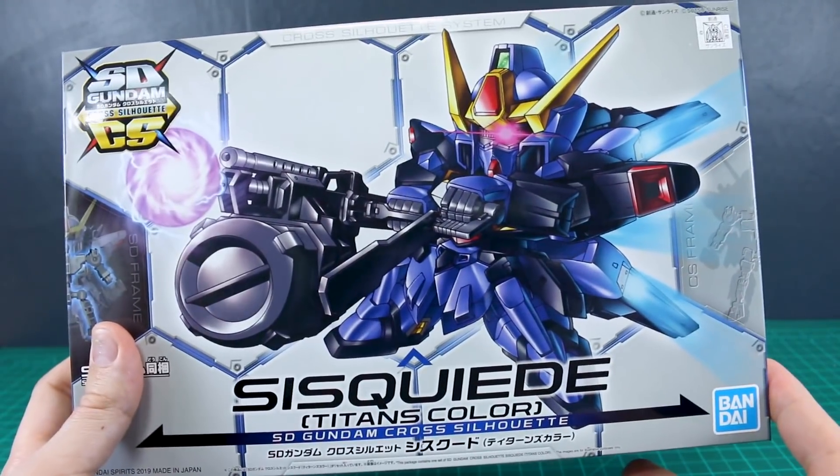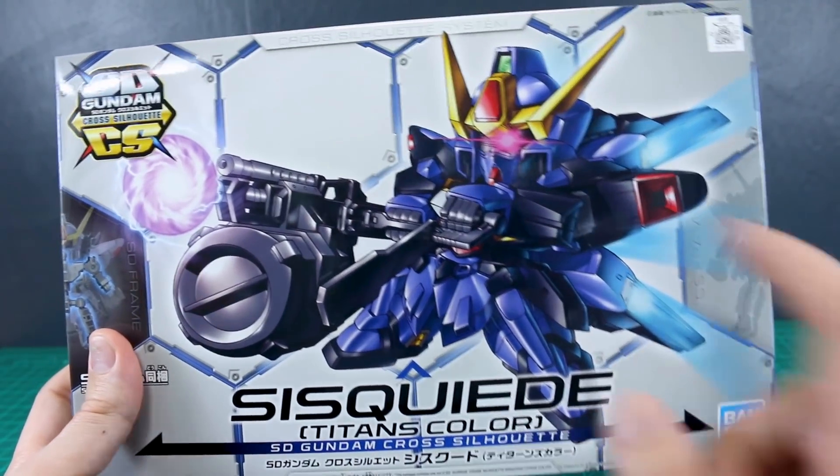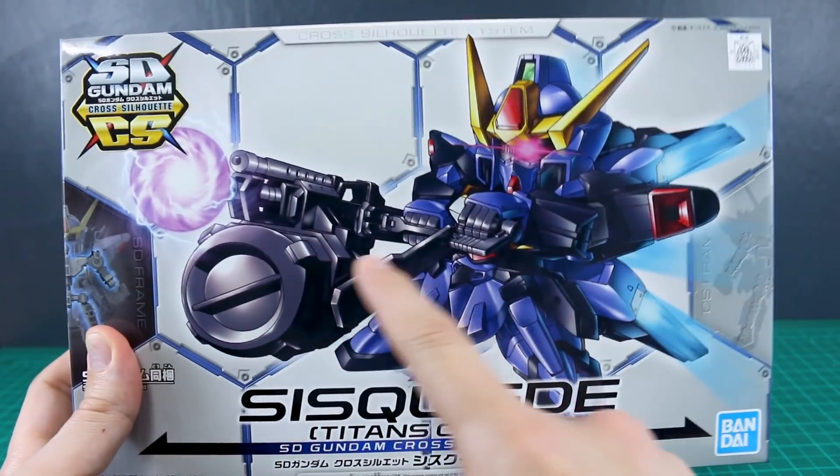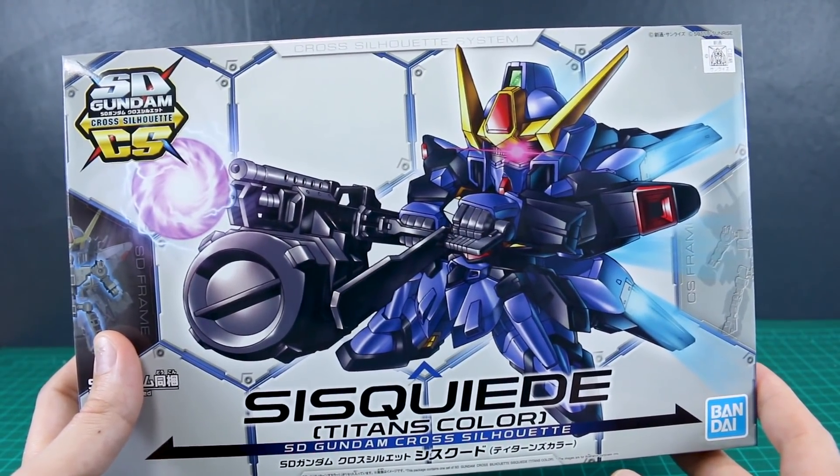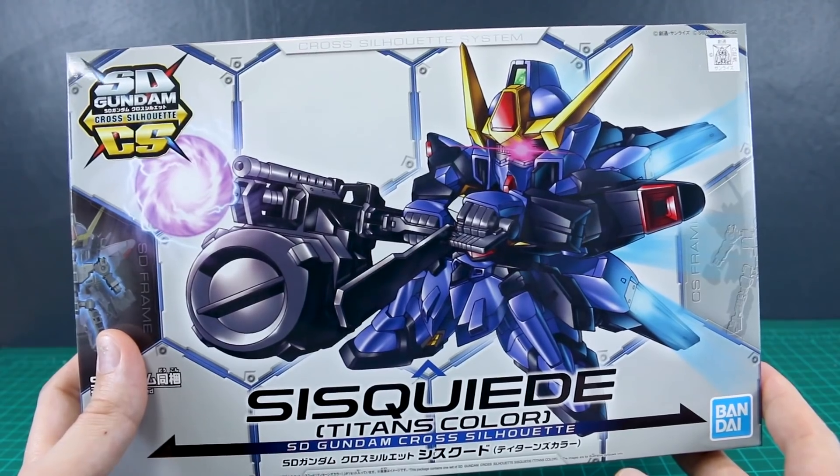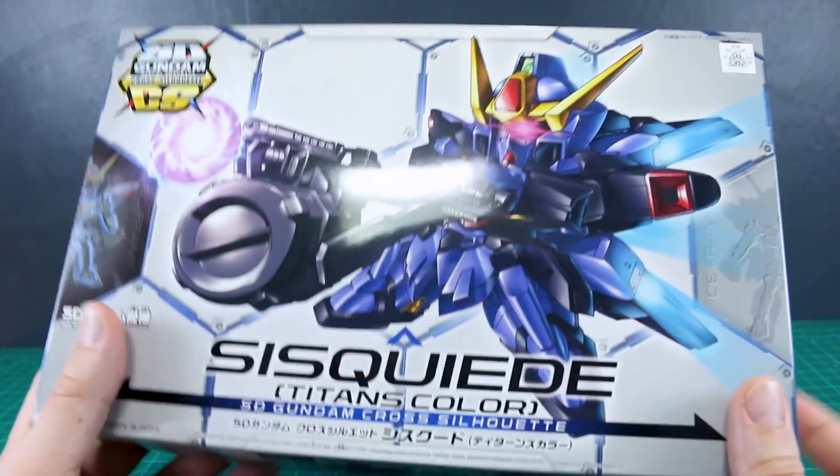With this being a mono-eye Gundam, one of the very few of them, you can see it's got a mono-eye. And it also has a really huge, ridiculous gun, which in SD form is not really as impressive as it would be in normal form, but it's still pretty impressive even in SD form here. So let's get into the kit.